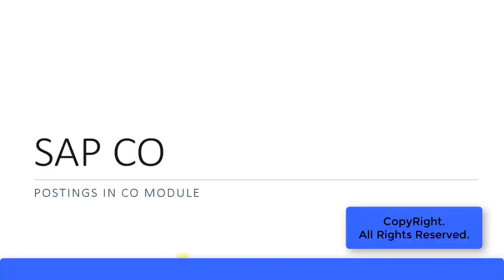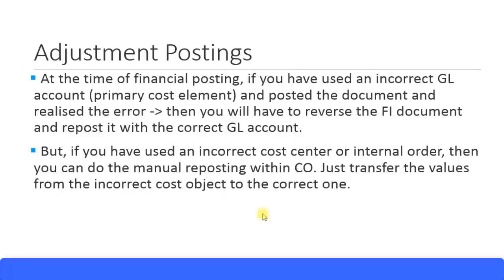Let's look at some postings in the CO module, specifically adjustment postings. At the time of a financial posting, if you have used an incorrect GL account — for example, instead of using the salaries expense account, you used the building rental expense account and posted the transaction — you have to reverse that document and repost it. There's no other way of doing it.